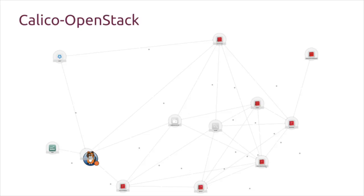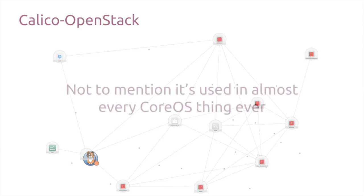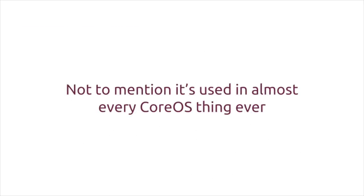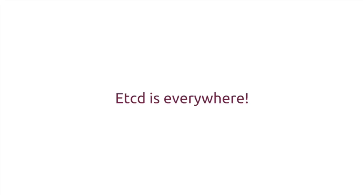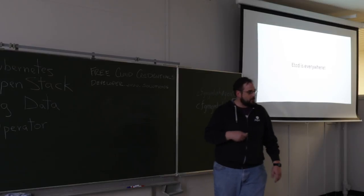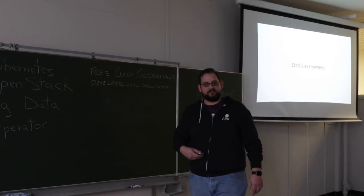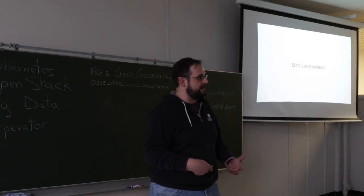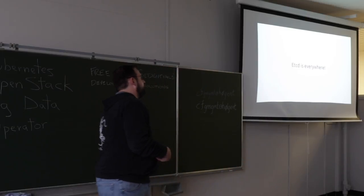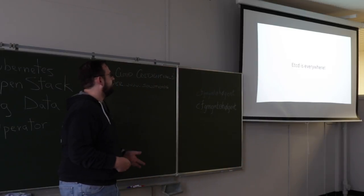etcd is also being used in a partner OpenStack distribution. So if you deploy with Calico, you're using our etcd charm, which is fantastic. And this basically means it's been in use in about everything that CoreOS has ever done. etcd is literally everywhere, and that means it's becoming a more and more important portion of our infrastructure. We really have to have a deep understanding of how this application behaves and what its domains are.